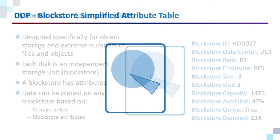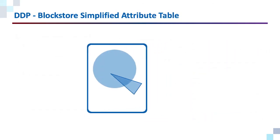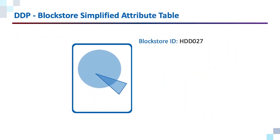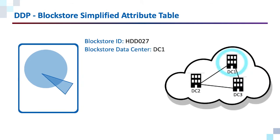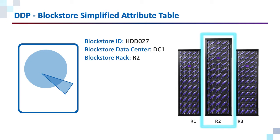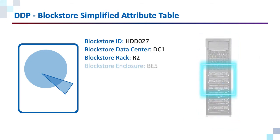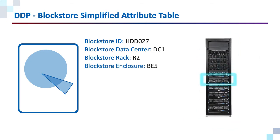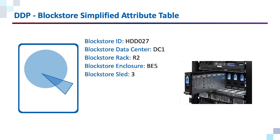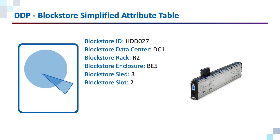Let's look at some of these attributes. A block store has an ID. A block store has a location — in this case, that block store is in data center 1. We know the rack that block store is in, rack 2 in this case. We know the storage enclosure that block store is in, and we know the sled and the slot.